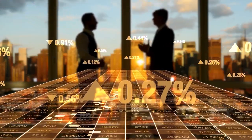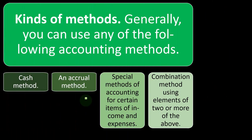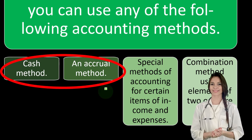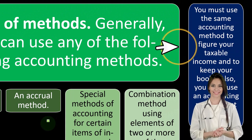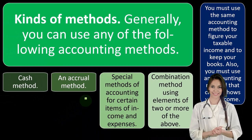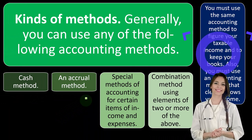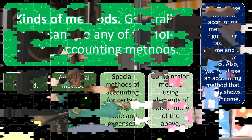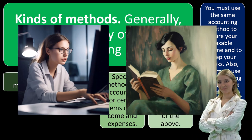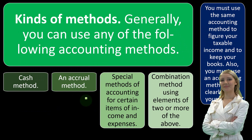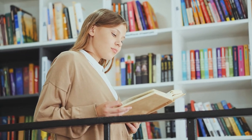Many small businesses are in a situation where they use a combo of accrual versus cash methods — for example, they may have to use an accrual method if they do work before they invoice a client. You must use the same accounting method to figure your taxable income and to keep your books. The IRS is skeptical if you're using an accrual method for your books but a cash method for your taxes, because it looks like you're doing that to cheat. It would be easier to use a cash method for both bookkeeping and taxes, or an accrual method for both.